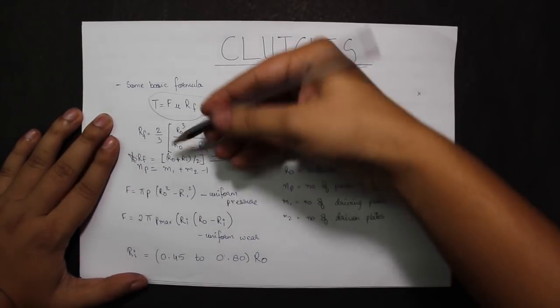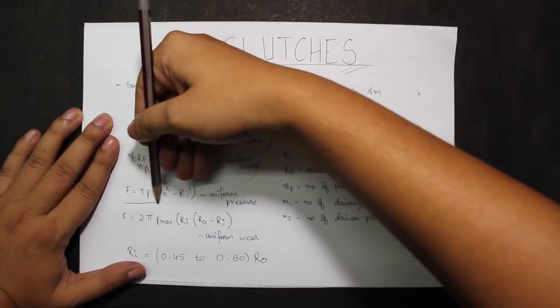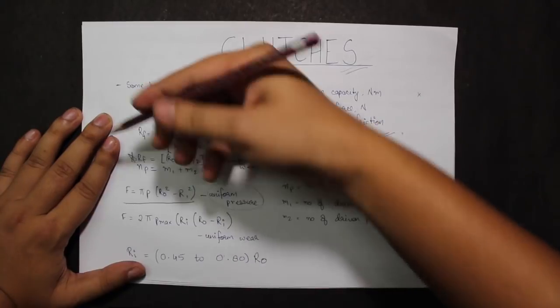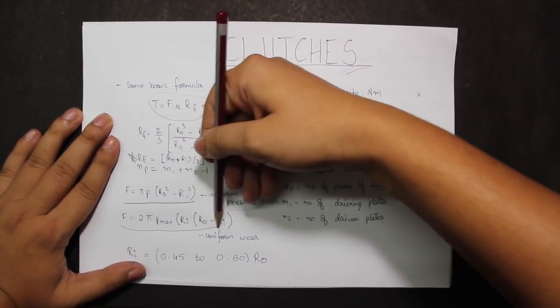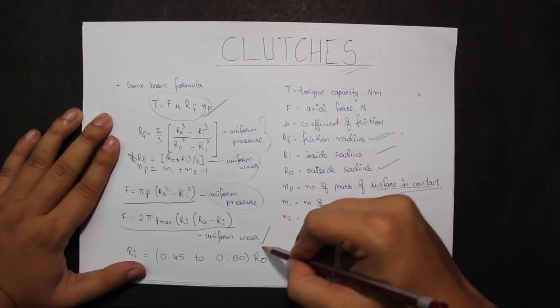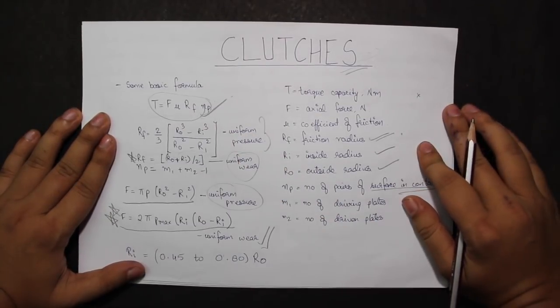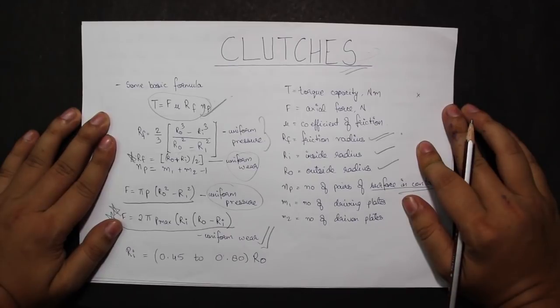F is equal to PI P R0 square minus RI square for uniform pressure, and F is also equal to 2 PI P max RI R0 minus RI for uniform wear. I'll be using this formula in the questions to calculate for uniform wear.